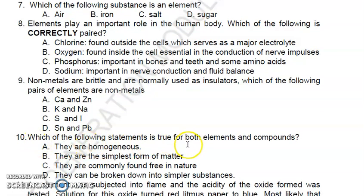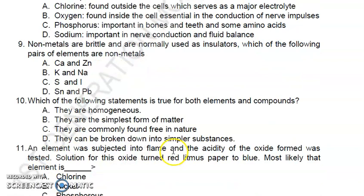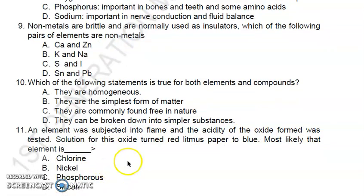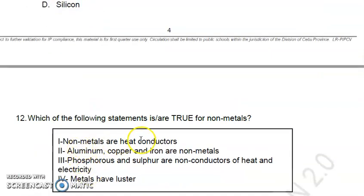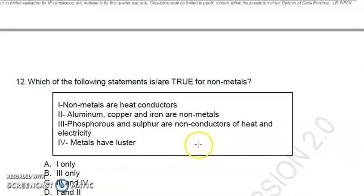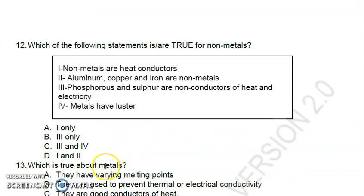Number nine: non-metals are brittle and are normally used as insulators. Which of the following pairs of elements are non-metals? The answer is letter C, sulfur and iodine. Number ten: which of the following statements is true for both elements and compounds? The answer is letter A, they are homogeneous. Number eleven: an element was subjected to flame and the acidity of the oxide formed was tested. The solution turned red litmus paper to blue. Most likely that element is letter B, nickel.